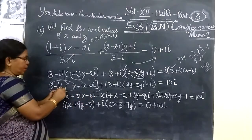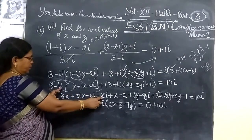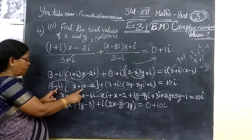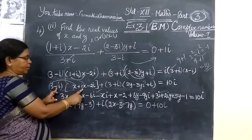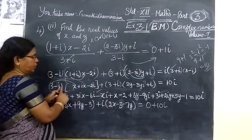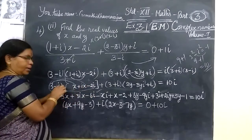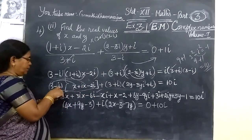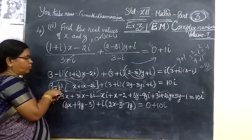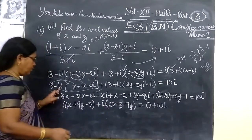Next you take minus i inside: minus i, and then i into i is i squared, and i squared is minus 1. Already there's a minus, so that becomes plus. Then you take 2i: i into i is i squared, which is minus 1. With the minus, that gives plus 2.